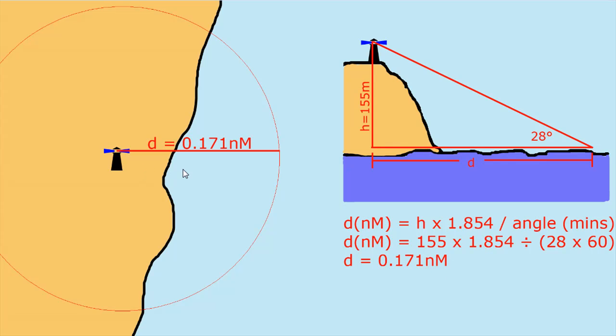So again you can draw that 0.171 nautical miles on your chart from the lighthouse center. So that's a position line that you will find yourself on.